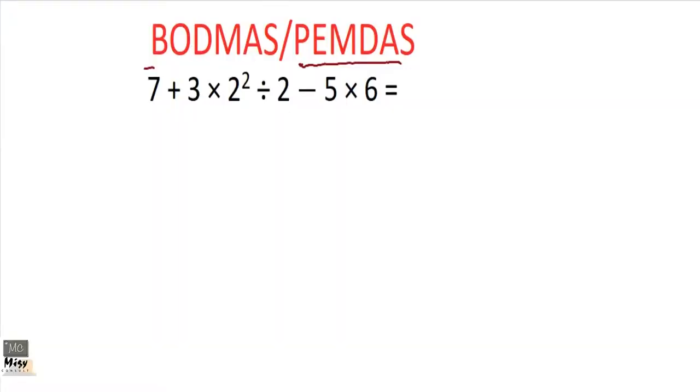When we see this question here: 7 + 3 × 2² ÷ 2 - 5 × 6, this is what we'll do. We know that there is no parentheses or brackets, so we first look for exponents. We move on; this is where there is exponents, so that is what we'll solve first.